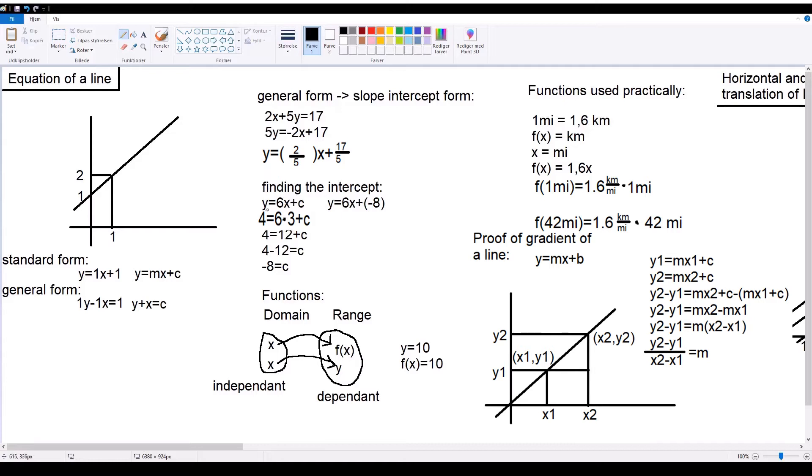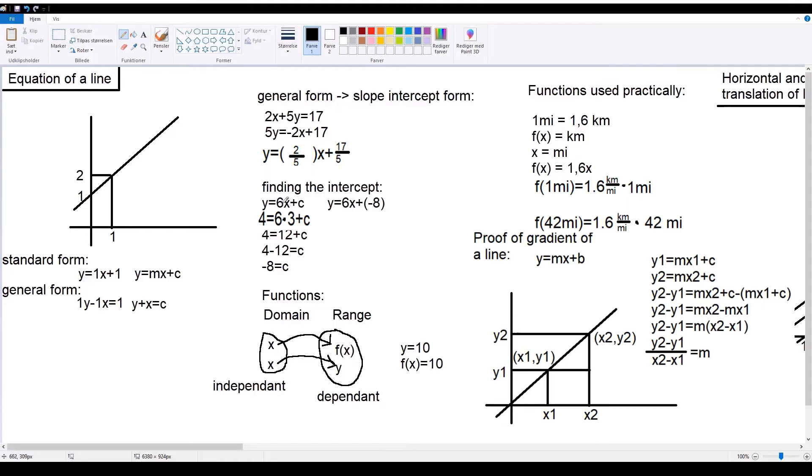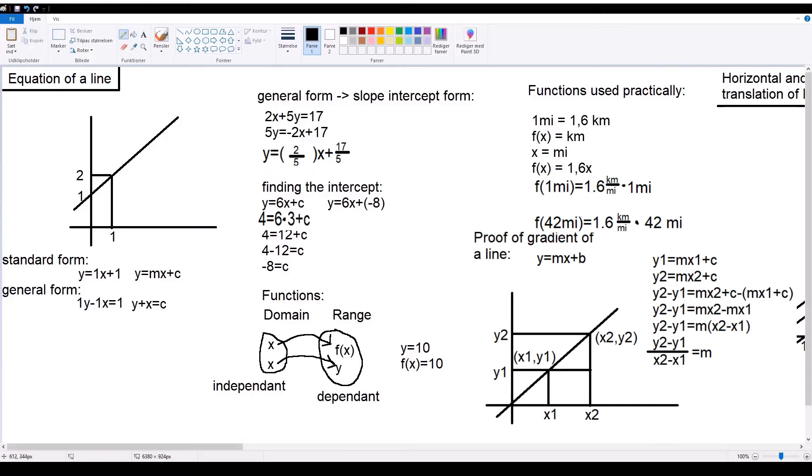you can input the values from that point into the line, if you know the gradient. And then you simply just isolate c as you do here. For example, this line is called y equals 6x plus c. We don't know what the intercept is, but we know a point which has the coordinates 3, 4, meaning that you input 3 and 4 in their respective values. Then you simplify. So, 6 times 3 equals 12.